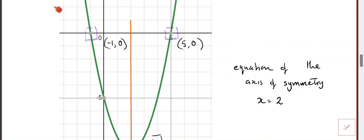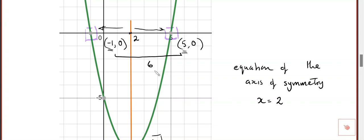The next thing we were hoping you'd find is that if this coordinate here is at x equals two, this point is halfway between those two. Negative one to five is a difference of six. Half of six is three. So if we go three back from five we get two, and if we go three forwards from negative one we get two, which is the x-coordinate of the vertex.